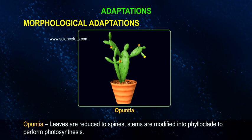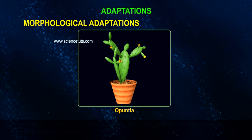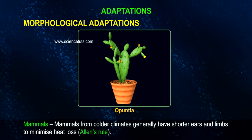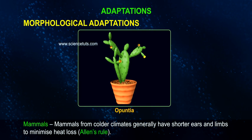In Opuntia, leaves are reduced to spines and stems are modified into phylloclades to perform photosynthesis. Mammals from colder climates generally have shorter ears and limbs to minimize heat loss — Allen's rule.